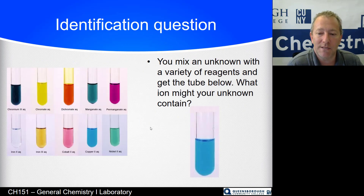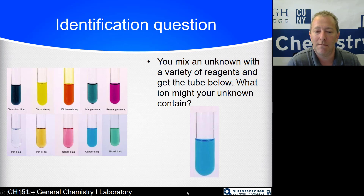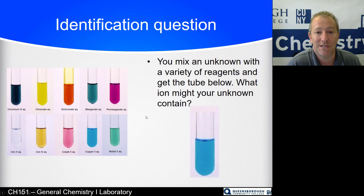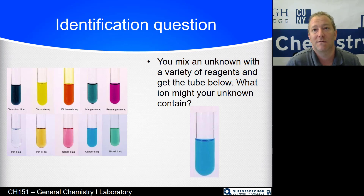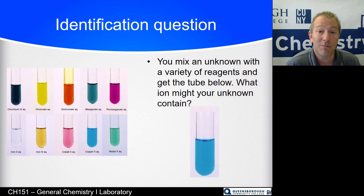Here's an example of what you'll be doing. You mix your unknown with a variety of different reagents and get a tube that looks like this one — what ion might it contain? It matches copper(II), so that's what it might contain. Could it be something else that looks blue that you didn't test? Possibly — which is why you test your unknown with four different reagents. The chances of getting four reactions that exactly match and it not being that cation are pretty slim.